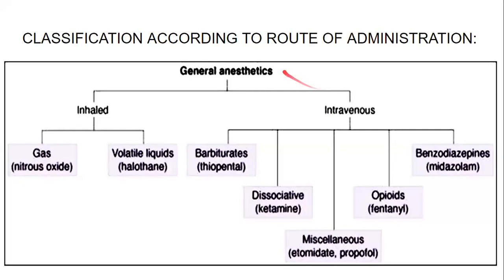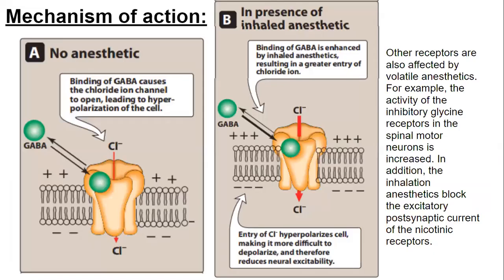Starting today, we are going to talk about general anesthetics, specifically the inhalation ones. For intravenous anesthetics we will have a brief overview of how they work, but today we are more focused on naming and the specific mechanisms of each medication. When an inhaled anesthetic is given, the binding of GABA is enhanced.